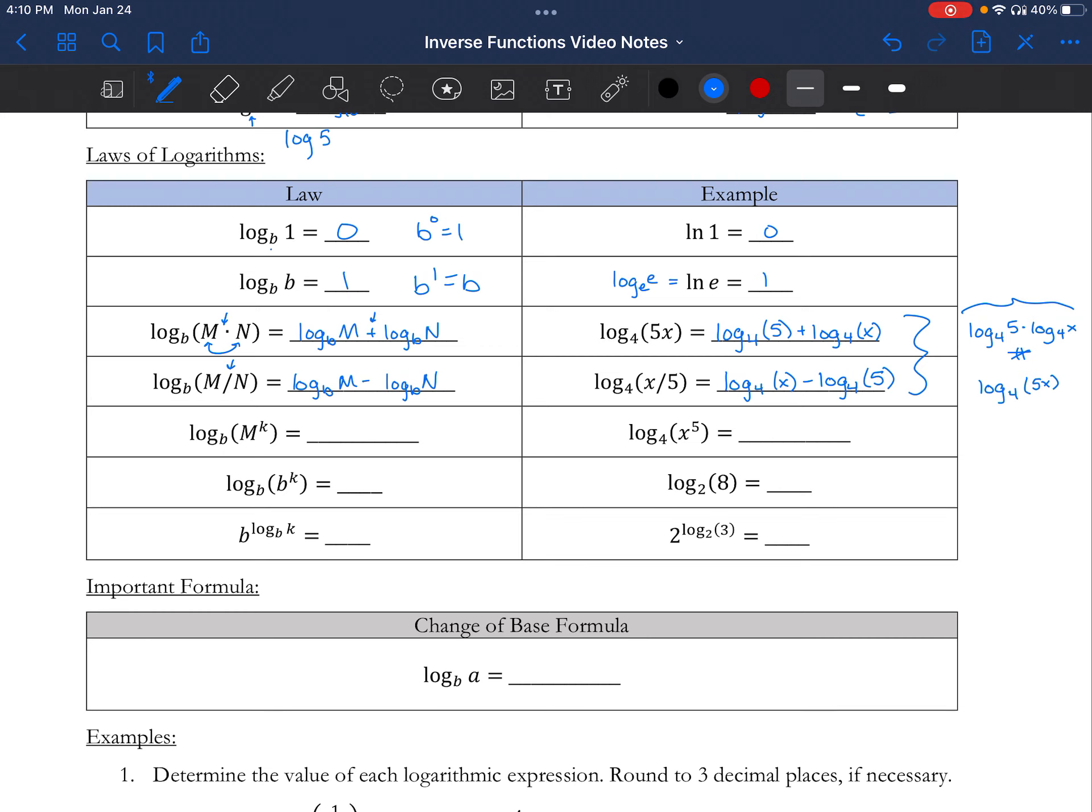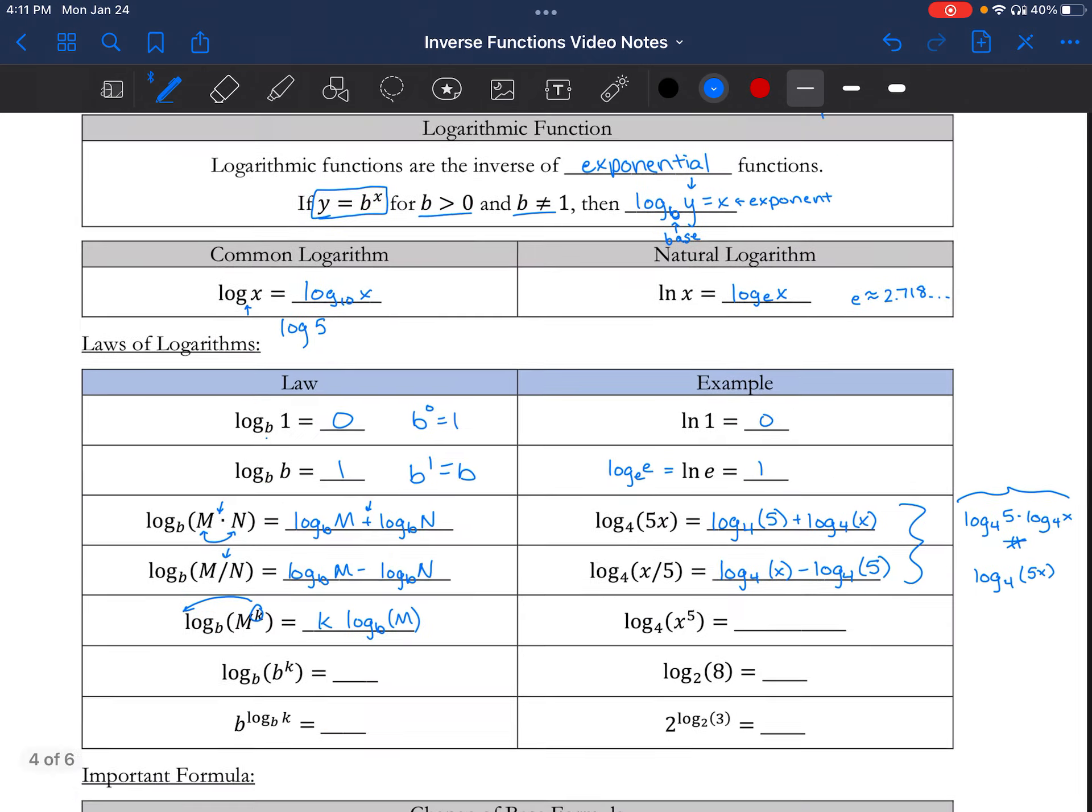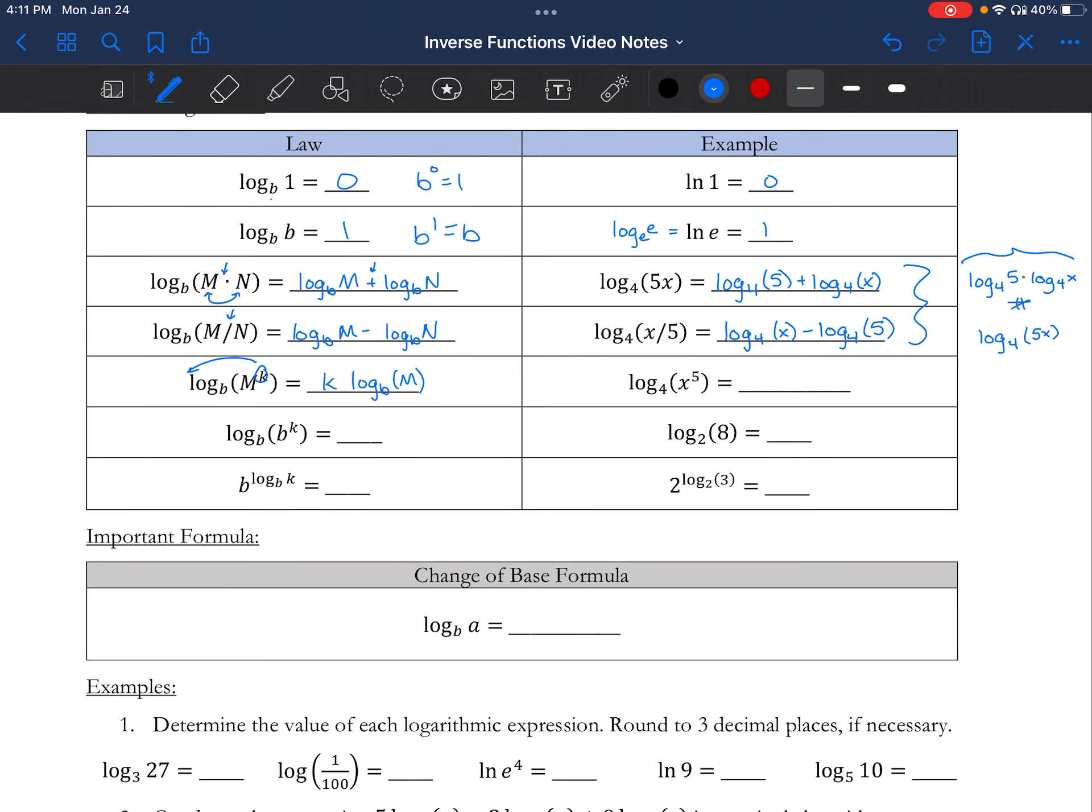Another one is, if I have log base b of some number to an exponent, I can actually just pull out the exponent out front. So it becomes k times log base b of m. This comes in a lot of handy when we try to do some of the calculations later on. If I have log base 4 of x to the 5th, what I can do is I can write it as 5 times log base 4 of x. For example, here's another one. If I have log base b of b to the k, this is a good example of when it comes in handy to know this rule. I can take the k out front, which leaves me with log base b of b. But log base b of b, we said earlier, was 1. So it's k times 1, which is just k. Essentially, these two b's will kind of knock each other out and we're left over with just the exponent, which was k.